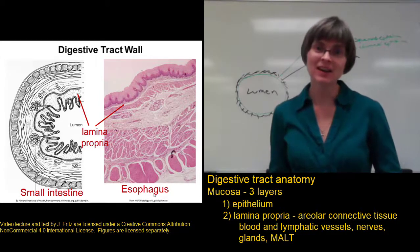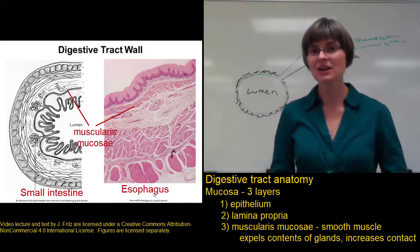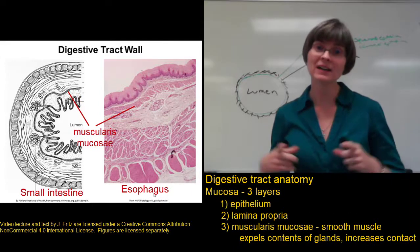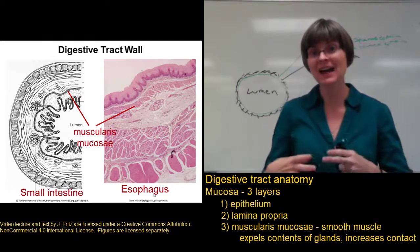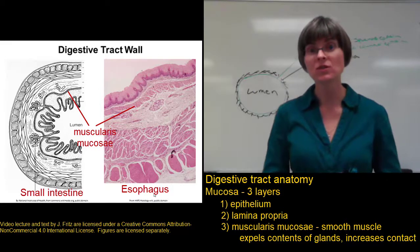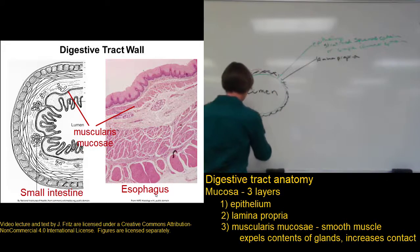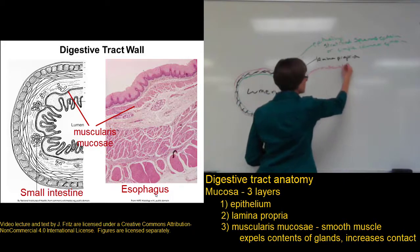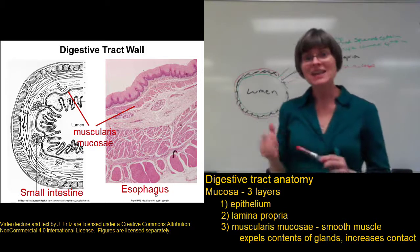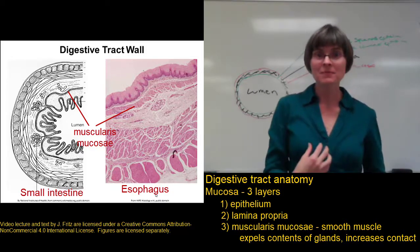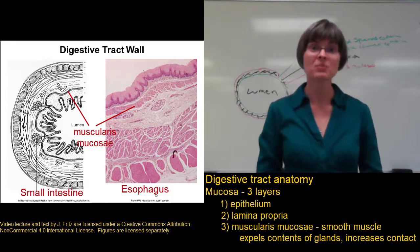The next layer that's still part of the mucosa is called the muscularis mucosi. This is a thin layer of smooth muscle that can contract to either expel the contents of the glands or to help increase contact of the mucosa with the food in the lumen. Together, the epithelium, the lamina propria, and the muscularis mucosi make up the mucosa.